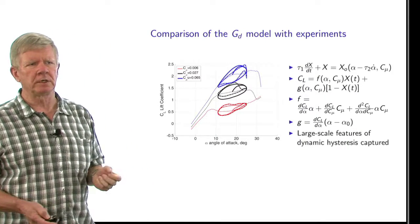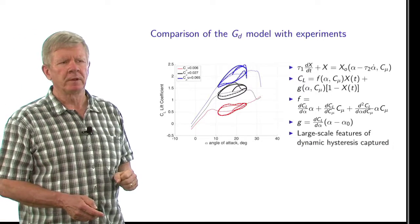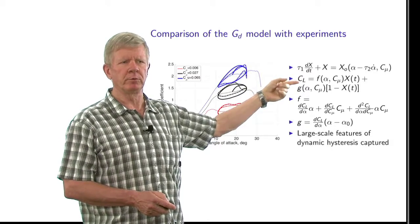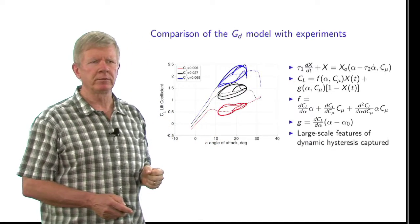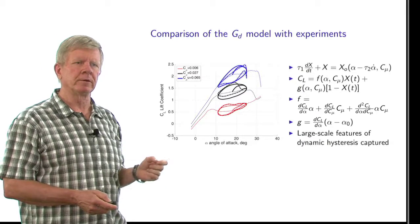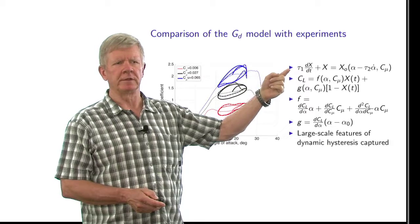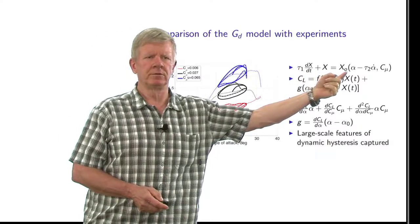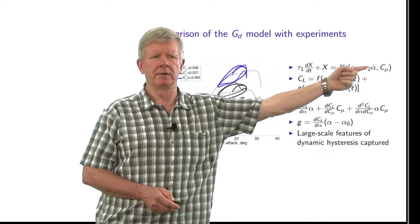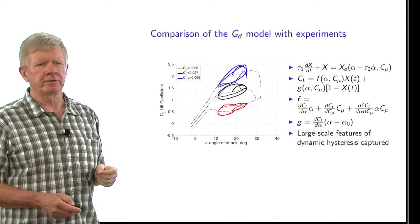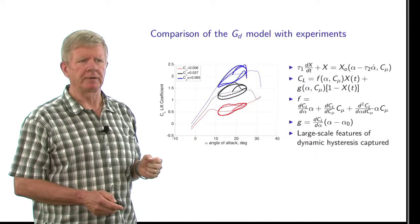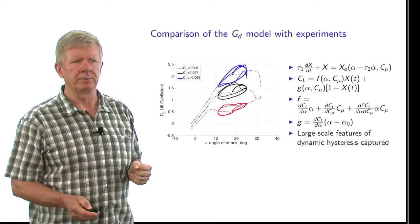So our first model for the disturbance is, with steady blowing and with a certain blowing amplitude C mu, can we reproduce these dynamic hysteresis curves? And we do this with a modified version of the Gomon-Khrabrov model, which is a state space model that uses two time delays. Tau 1 is the relaxation time constant. Tau 2 is the actual time delay multiplying the pitch rate. And we've added a C mu component in this equation as well. The details you can find in the paper, but you see the comparison between the experiment and the model in this plot here, and it does a reasonable job of reproducing the disturbance effects.